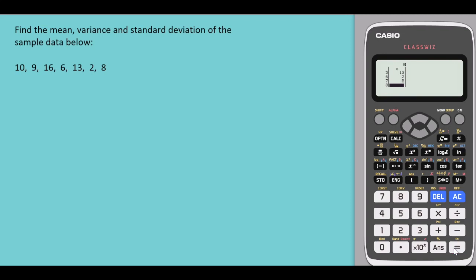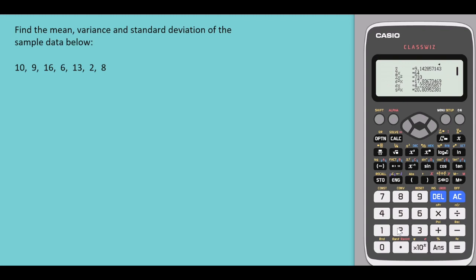Once done, press AC and go to Options. Select two for the values of the sample mean, variance and standard deviation. Selecting two — and there you go.